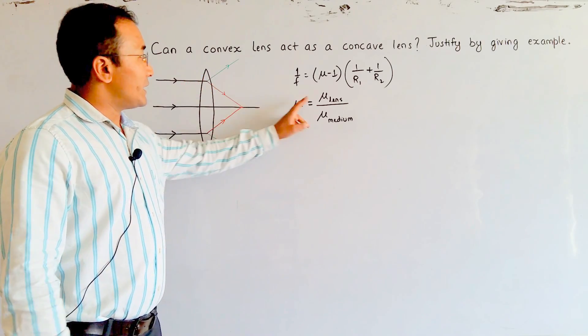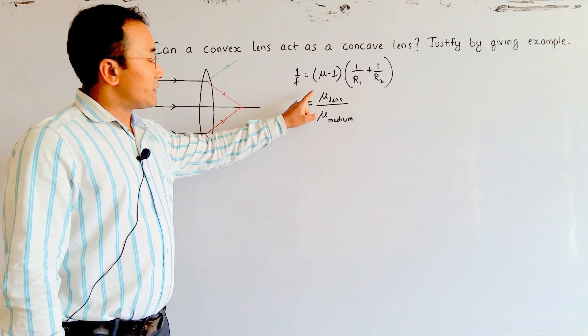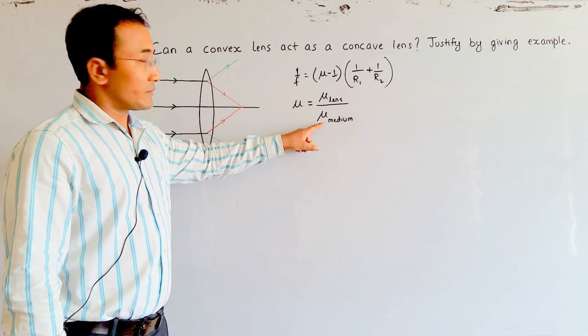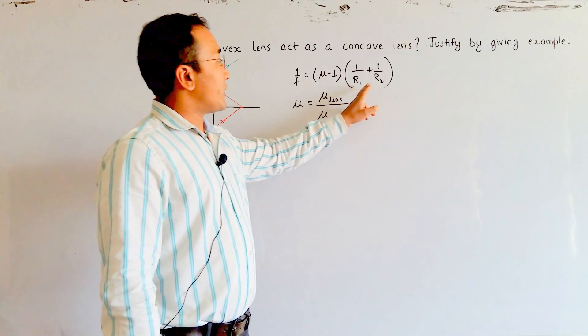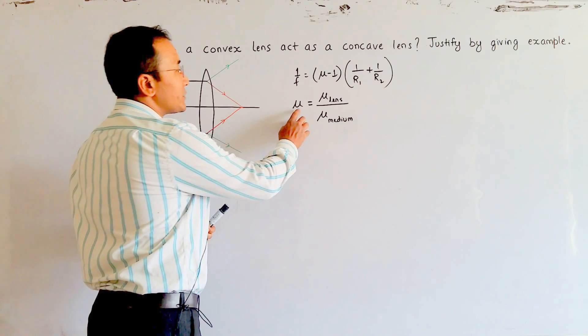μ is the ratio of the refractive index of the lens and that of the medium. r1 and r2 are the radii of curvatures of the surfaces. This μ depends on μ_lens and μ_medium.